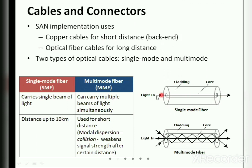In single-mode fiber, data is transferred as light. There is only one input beam being fed, used for distances up to 10 kilometers, with no interference. In multi-mode fiber, multiple beams of information are transferred simultaneously. Multi-mode fiber is used for shorter distances because as there are many rays traveling, they collide with each other. You can see the collision of rays taking place, which decreases signal strength — so multi-mode cannot be used over long distances.